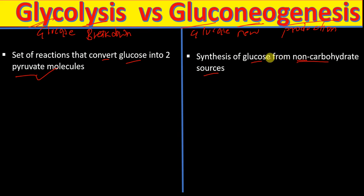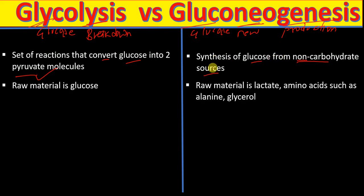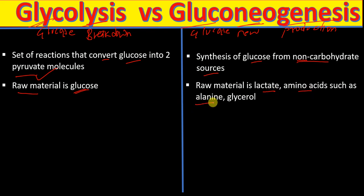In glycolysis, the raw material or starting material is glucose, whereas in gluconeogenesis the raw material is non-carbohydrate sources such as lactate, amino acids such as alanine, and glycerol.